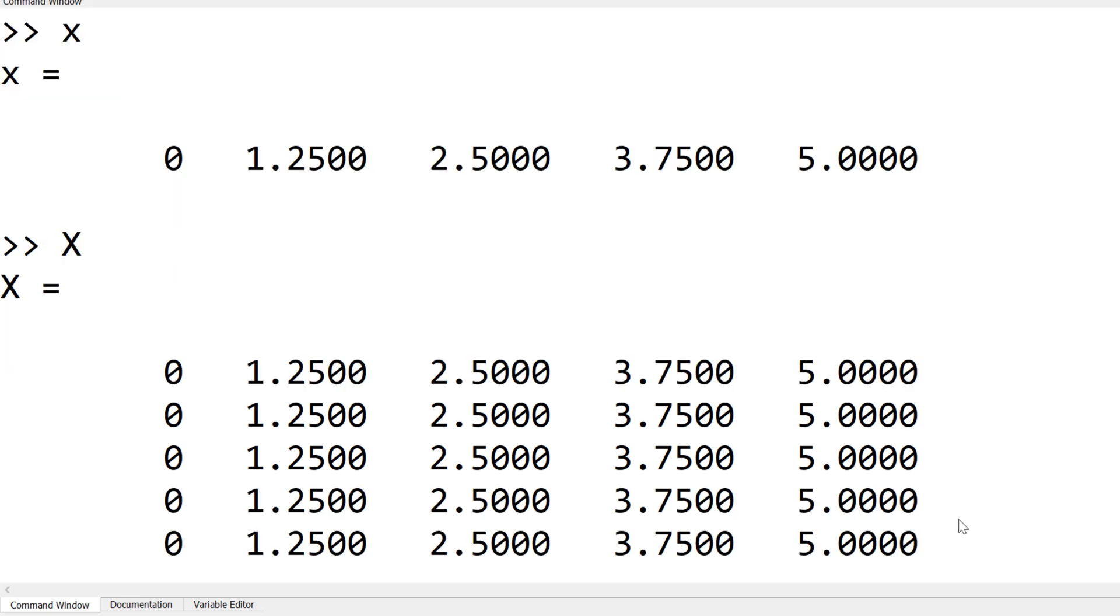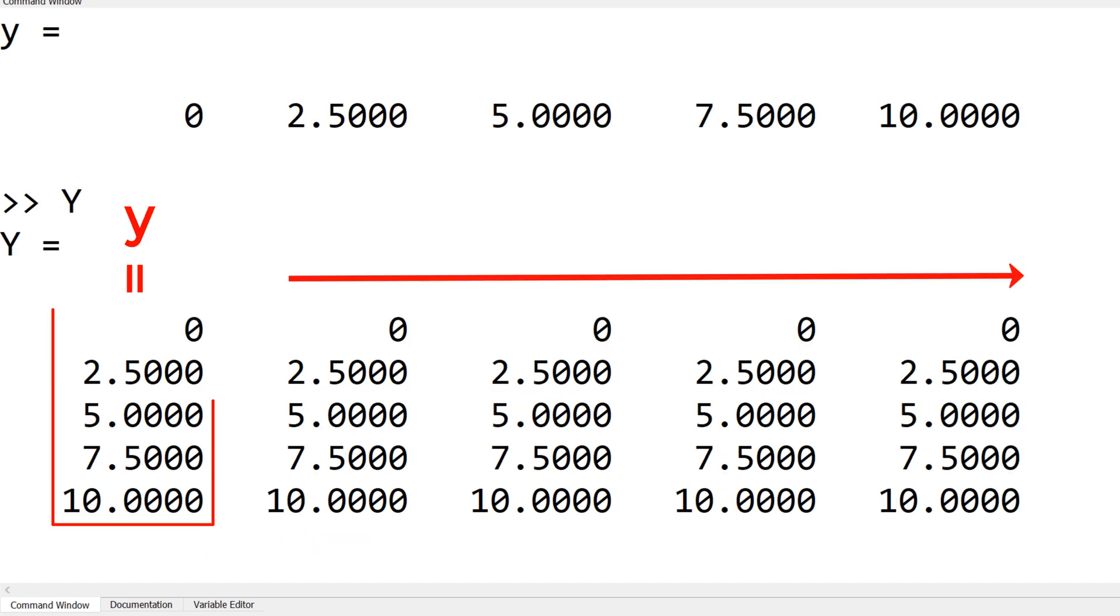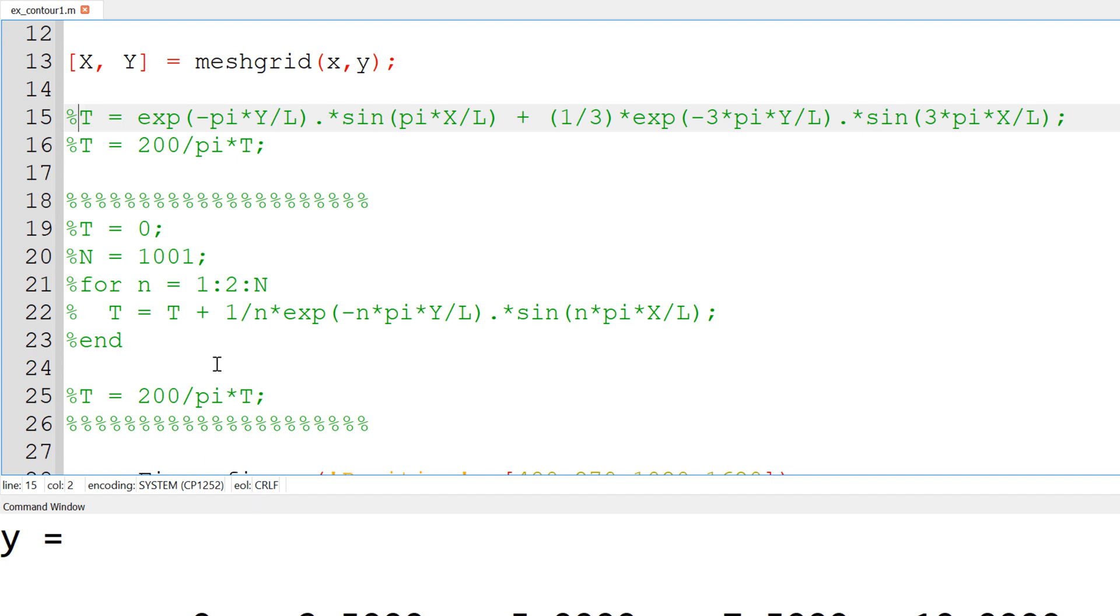When you generate the mesh grid for the 2D plot, it will expand the 1D row vector towards the 2D by repeating each row towards the 5. So basically, this is a square matrix. When you take a look at the mesh grid of y, row vector y repeats columnar direction.